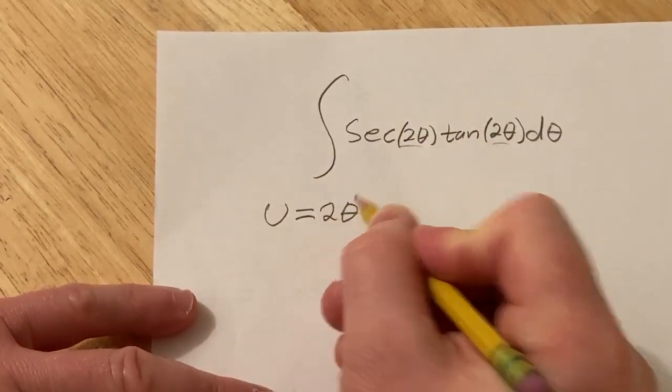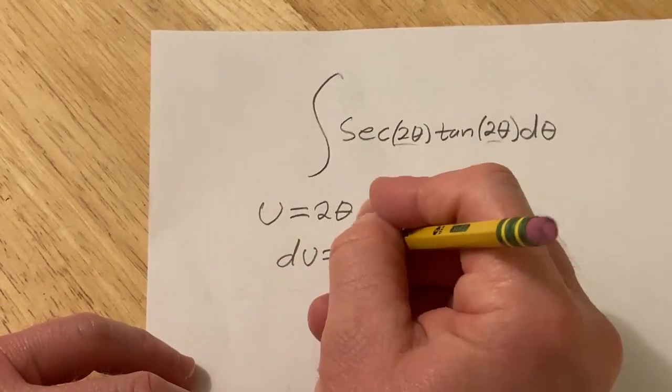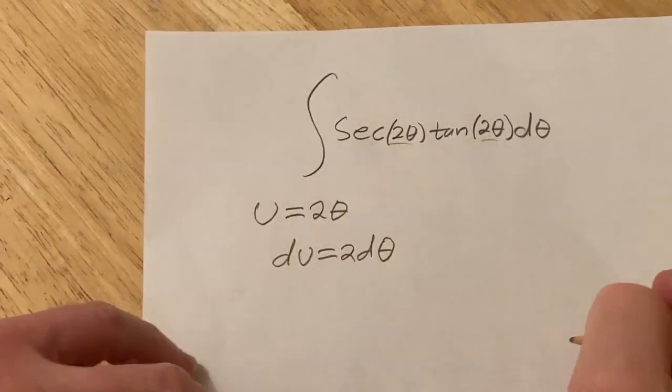We'll let u be equal to 2 theta, and then so du is going to be 2 d theta.